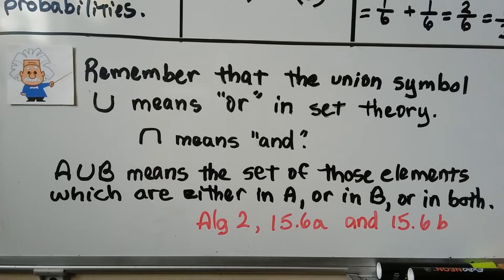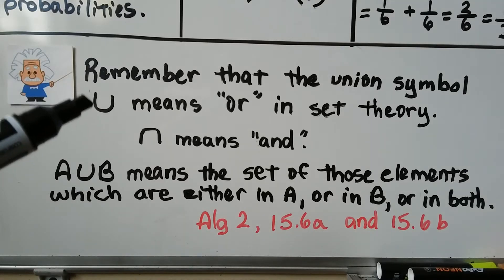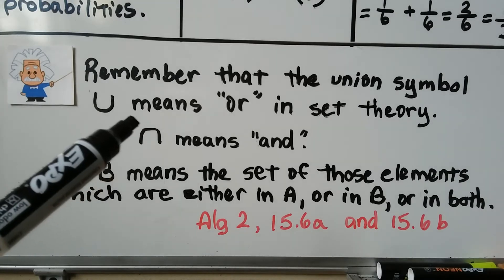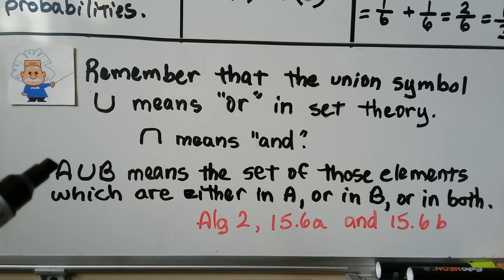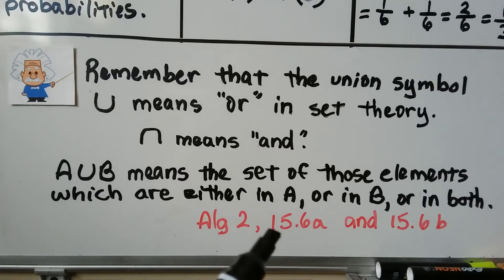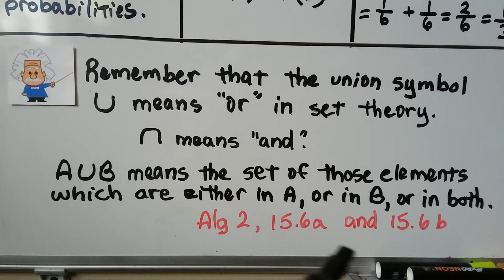Remember that the union symbol — this wide U shape — means OR in set theory. If it's upside down, it means AND. This is a union; that's an intersection. So A union B means the set of those elements which are either in A or in B or in both. I'll have links to the Algebra 2 15.6a and 15.6b lesson videos that go into more detail about these if you need it.